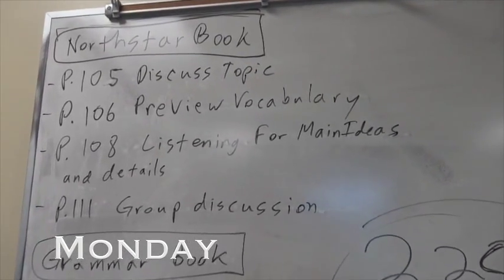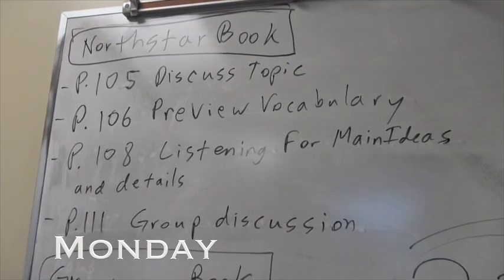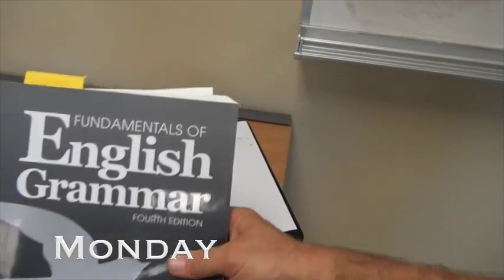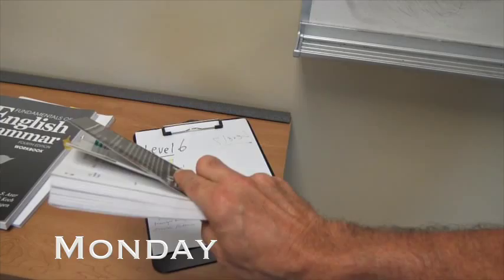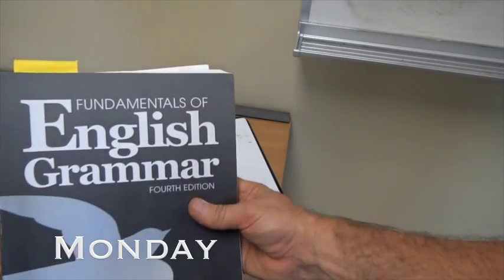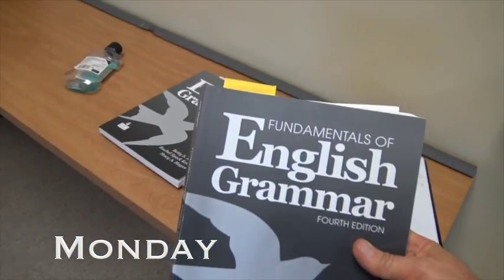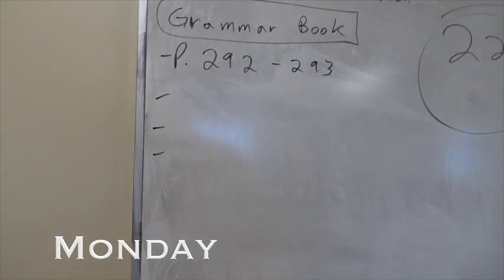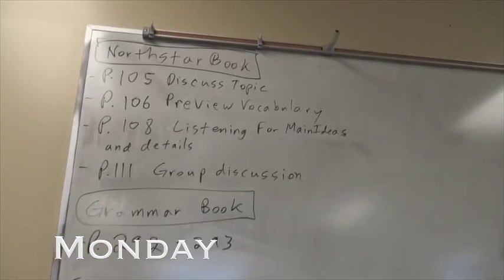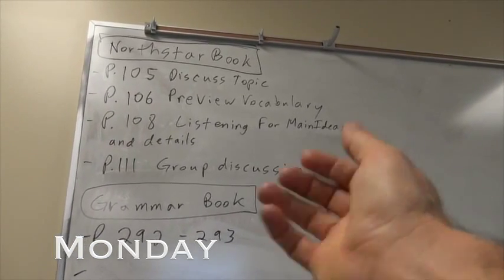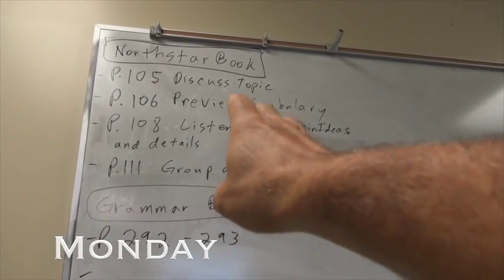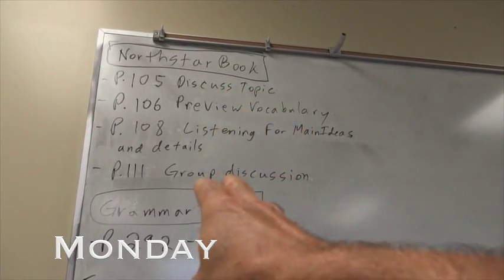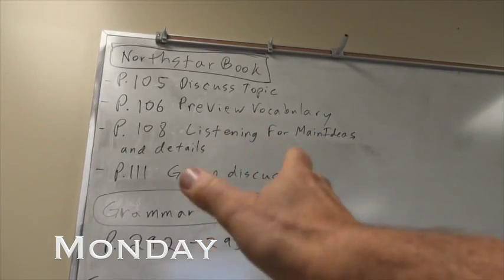Then everyone puts the North Star book away and gets out the thick grammar book — the main grammar book. They don't ever really bring out the workbook unless I'm checking it, but remind them. Level 7 is identical in process — they'll do the very first thing at the beginning of their chapter. I'll have it written on the piece of paper in the folder. Same process, basically.